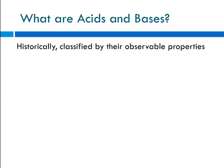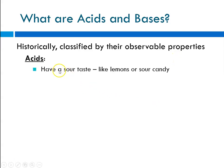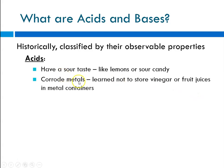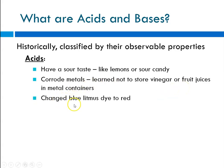Historically, acids and bases are classified according to observable properties. In general, things that have a sour taste — like lemons, sour patch kids, or sour candies — are acids. They are known to corrode metals, which is why early on people learned not to store vinegar or fruit juices in metal containers. They're typically put in glass or plastic bottles because acids will corrode metal. Acids also change blue litmus dye to red.